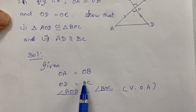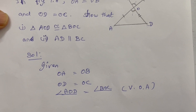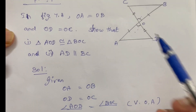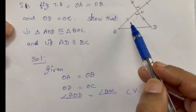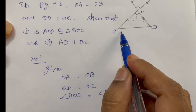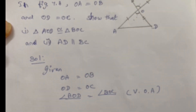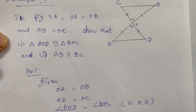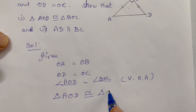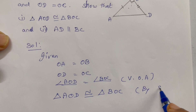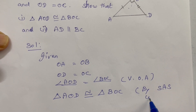Now we have the rule: two sides equal and one angle equal — that is the Side-Angle-Side congruence rule. Applying it to triangles AOD and BOC: Triangle AOD is congruent to Triangle BOC. Reason: by Side-Angle-Side congruence rule.